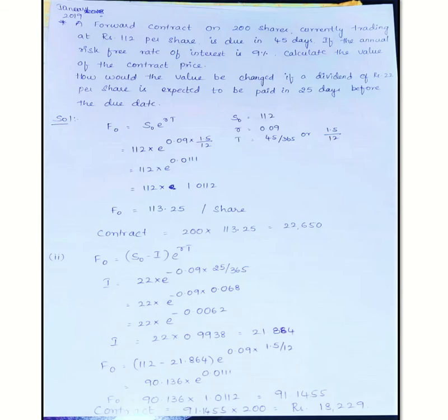Here 200 shares lot size, spot price Rs. 112 per share, due in 45 days, so expiration is 45 days time period. So T should be 45 by 365, or if I convert that into 1.5 by 12 months. Risk-free rate of interest is 9%. There's no yield or known income given, so this is treated as no income case.